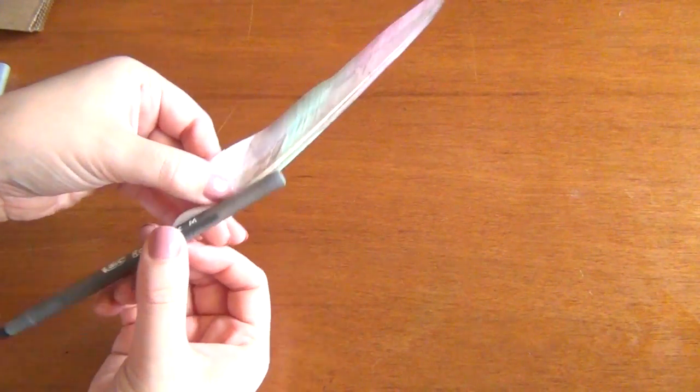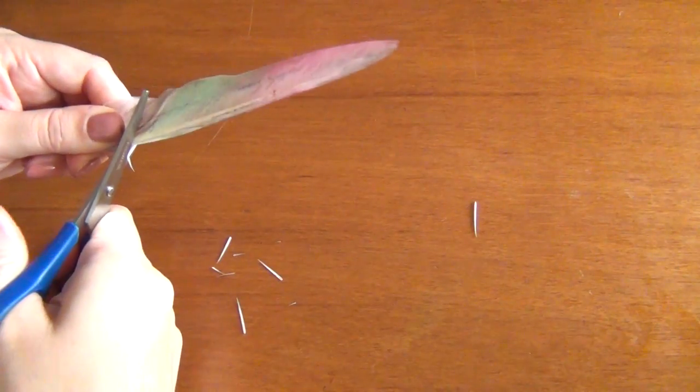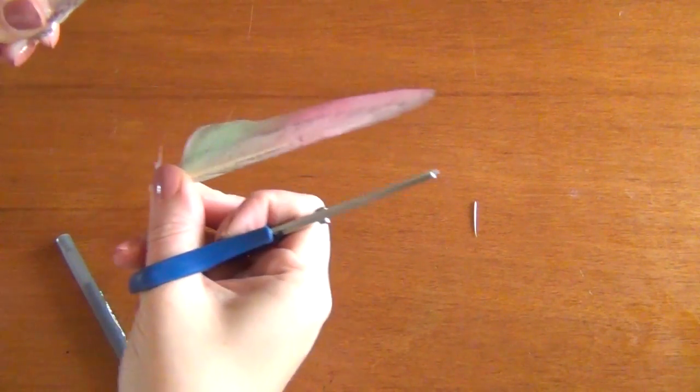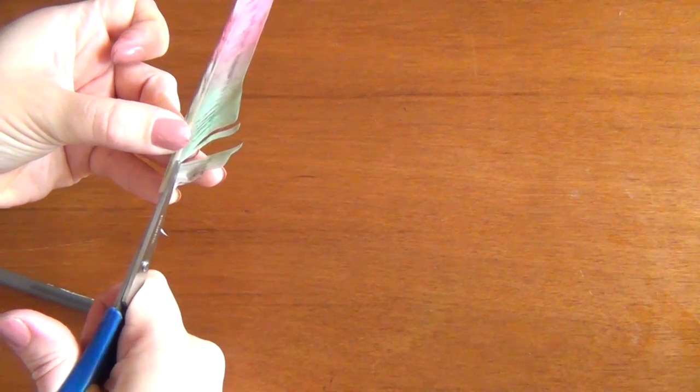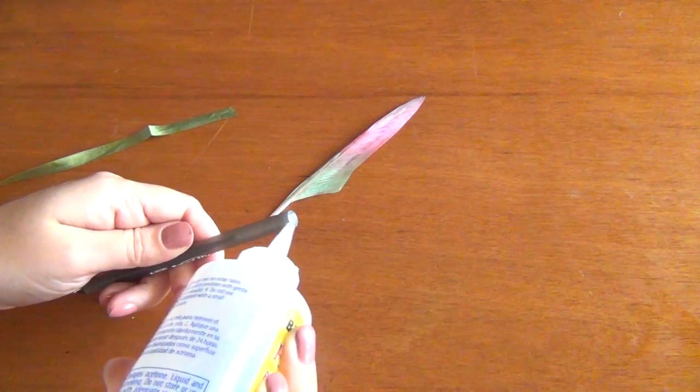Once your feathers are completely dry measure how long you want them to be off of the end of the pen. Then cut them to that length and cut off any excess plumage so that you have a nice stem to work with. This is going to give you something to adhere to the tip of the pen.